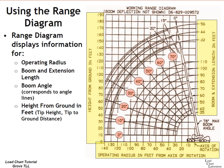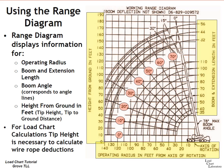The range diagram also contains information for the tip to ground distance, or as it's labeled on the diagram, height from ground in feet, which is again the tip to ground distance or the tip height. This tip height is used to calculate the wire rope deductions, which are a component of net capacity calculations or gross load calculations. That's pretty important.